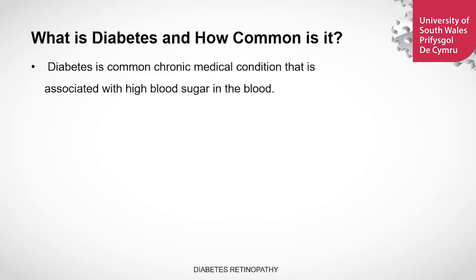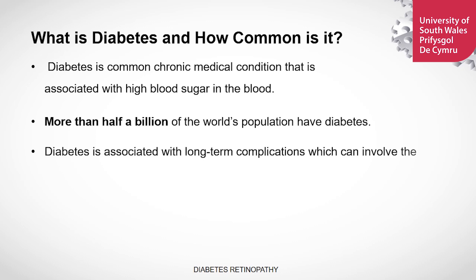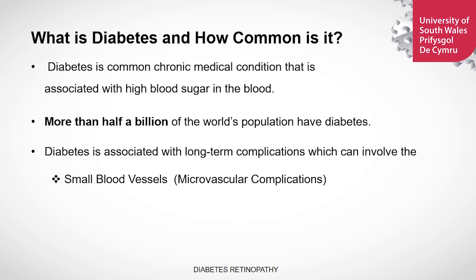Diabetes is a common chronic medical condition that is associated with high blood sugar. More than half a billion of the world population have diabetes. Diabetes is associated with long-term complications which affect the blood vessels. When the small blood vessels are affected, these are called microvascular complications. When the large blood vessels are affected by diabetes, it's known as macrovascular complications.